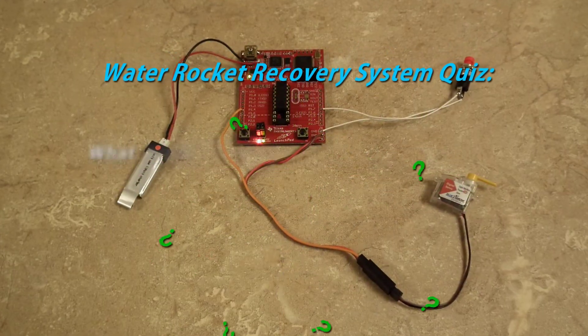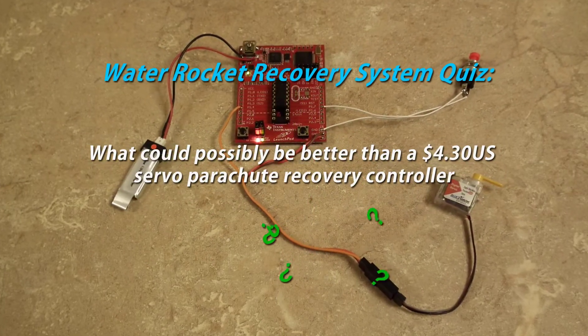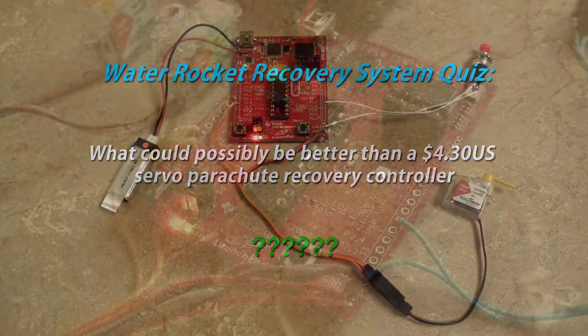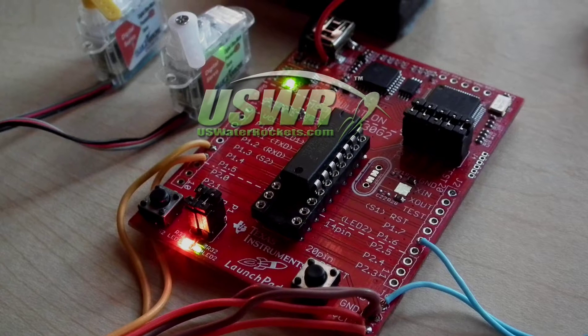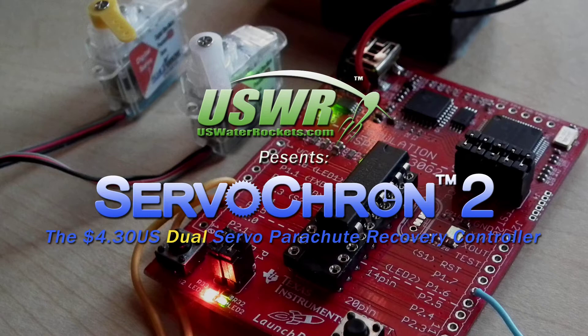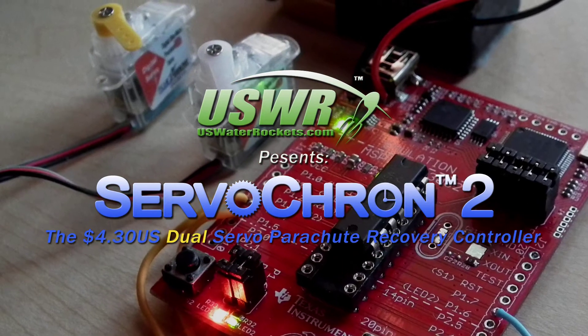Water rocket recovery system. What could possibly be better than a $4.30 servo parachute recovery controller? US Water Rockets presents Servocron 2, the $4.30 dual servo parachute recovery controller.